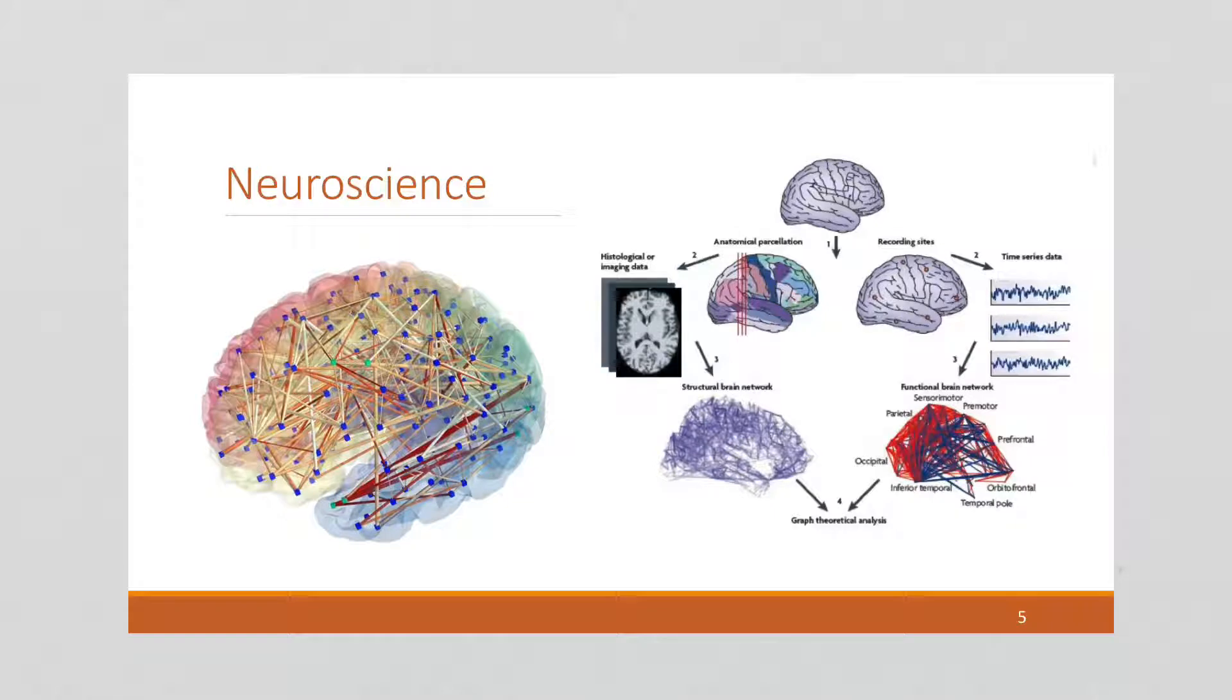In neuroscience, graphs are used. People are actively working on graphing the human brain. So we have all these different parts of the brain represented by these vertices, these blue vertices, and the lines represent how they are connected to other parts of the brain. And this is an active area of research. I work with a person who is working on this project, in fact. So graphing the brain is another application of graph theory.